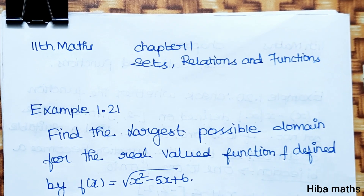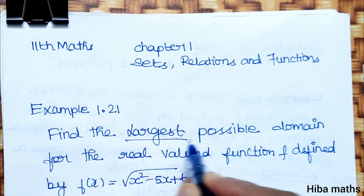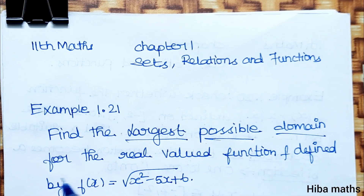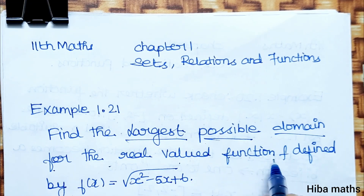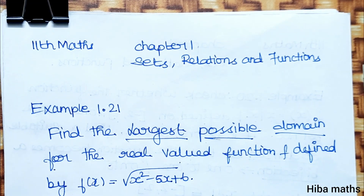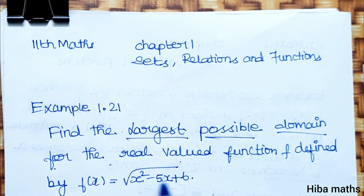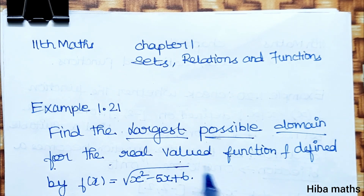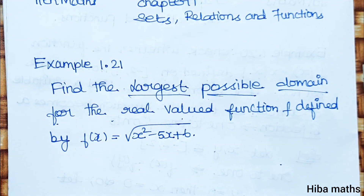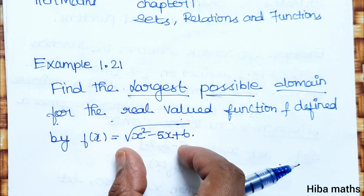Find the largest possible domain for the real valued function f defined by f(x) is equal to root of x squared minus 5x plus 6. So f(x) is equal to root of x squared minus 5x plus 6.